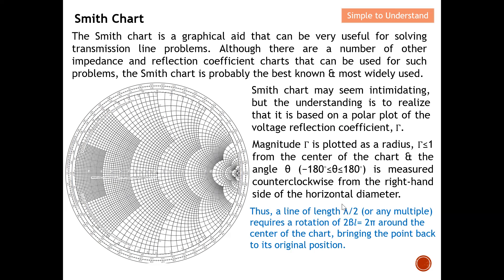A transmission line with a length of λ/2, or any integer multiple of it, results in a rotation of 2π (360°), which means the point returns to its original position on the Smith chart. So a transmission line of λ/2 brings you back to the same original point — that is what the λ/2 periodicity means on the Smith chart.